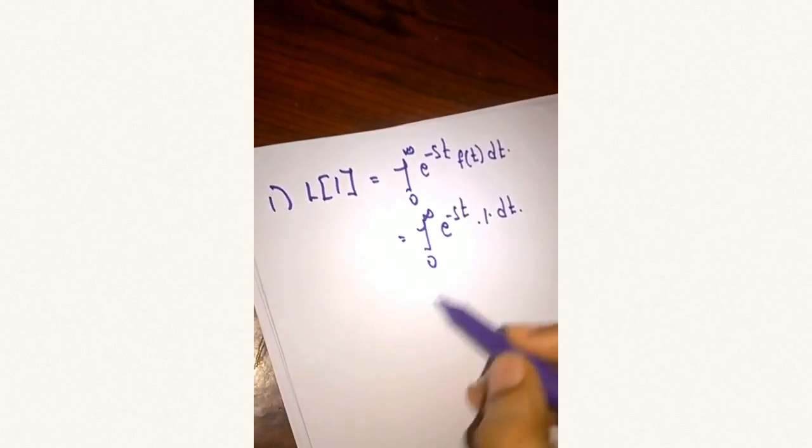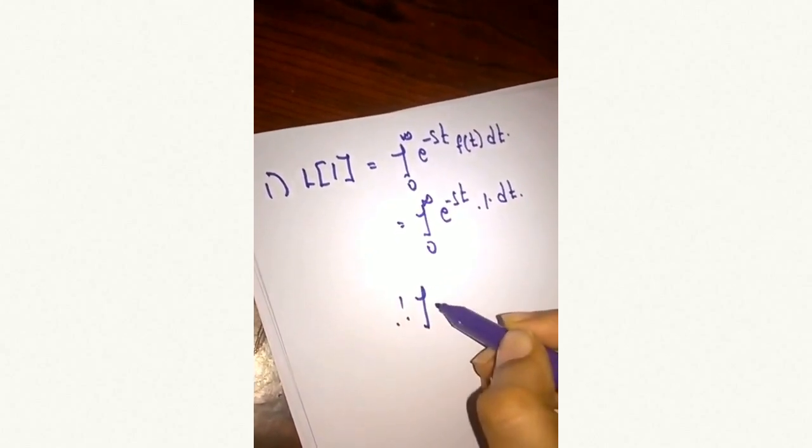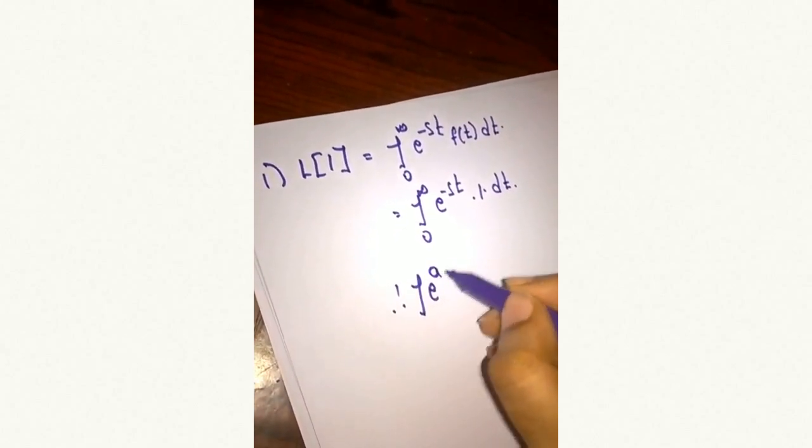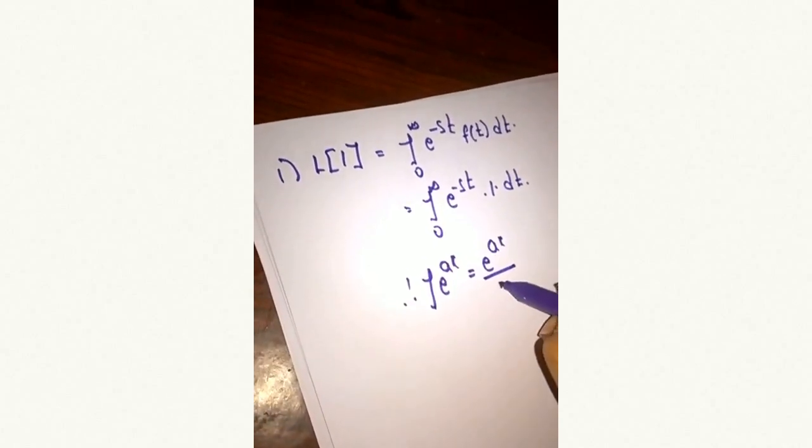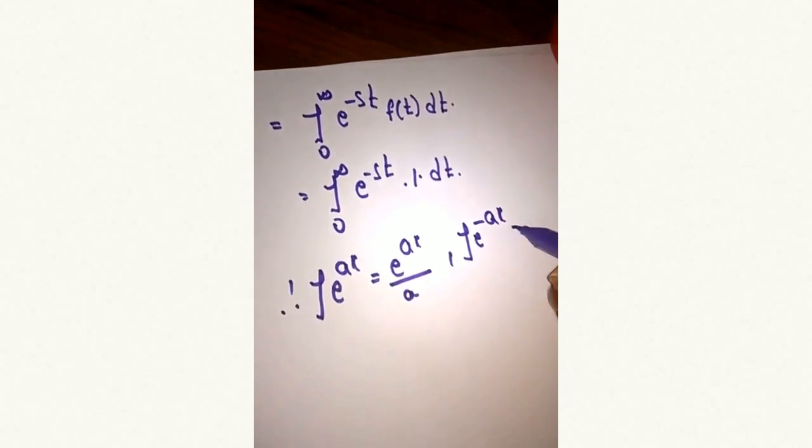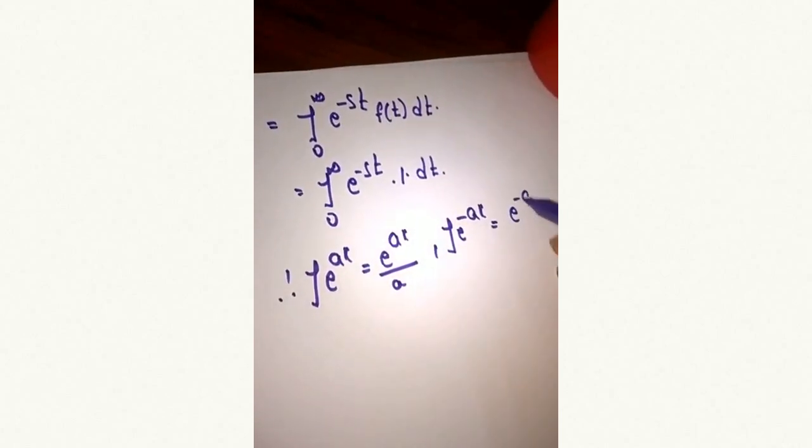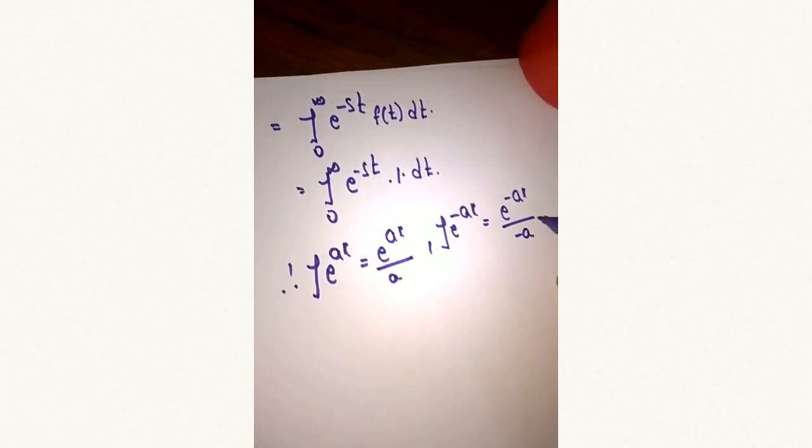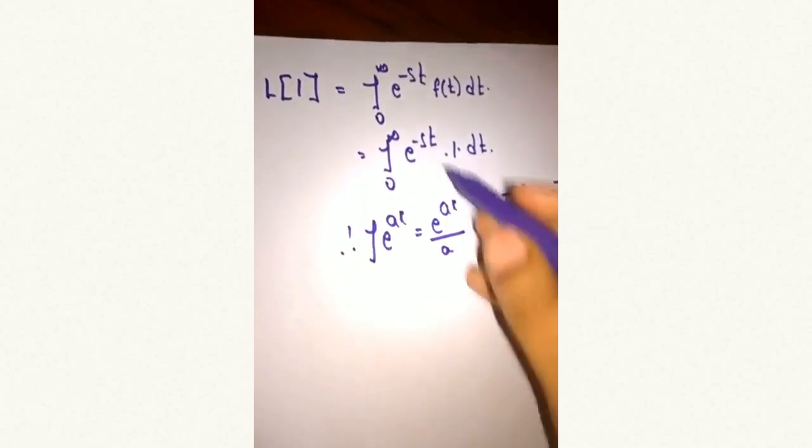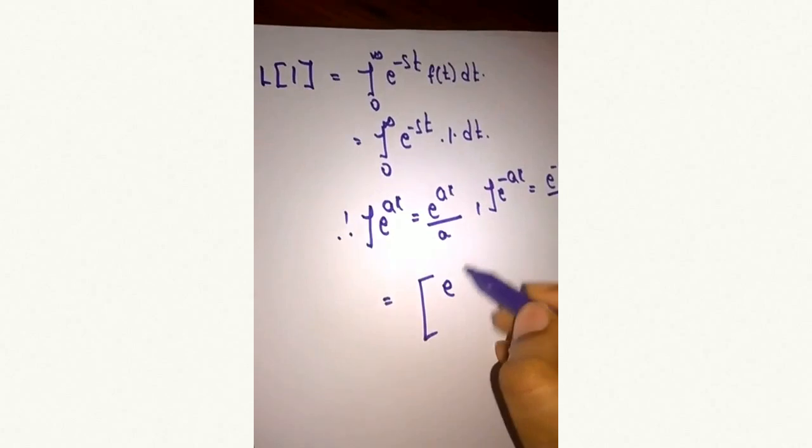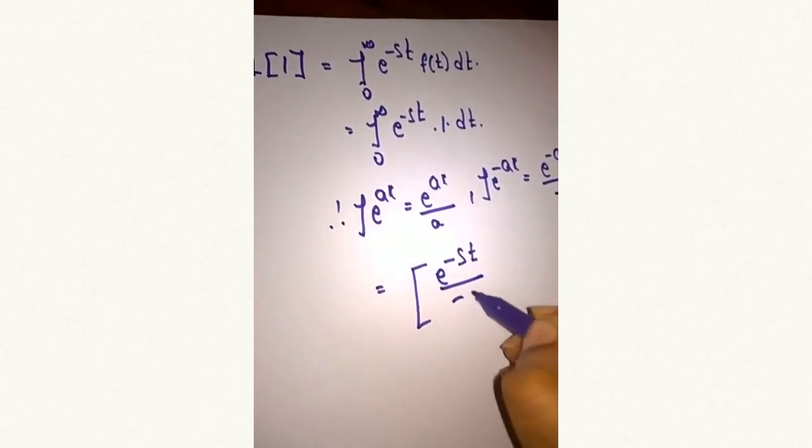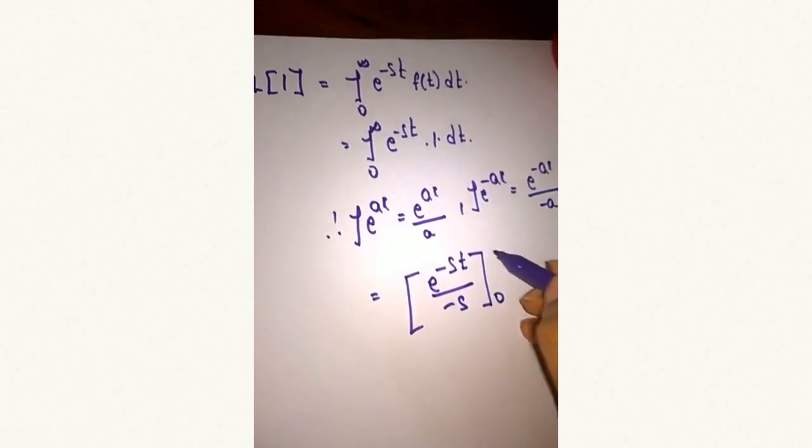The formula for integral e power minus st is e power minus ax by minus a. We substitute e power minus st by minus s, with limits 0 to infinity.